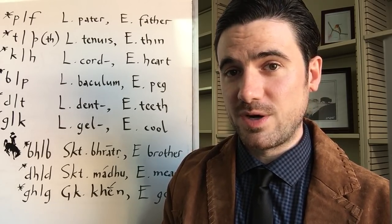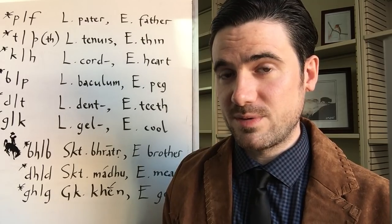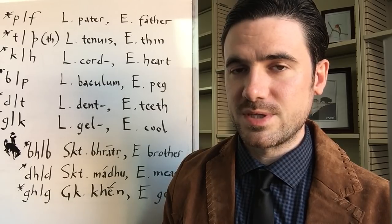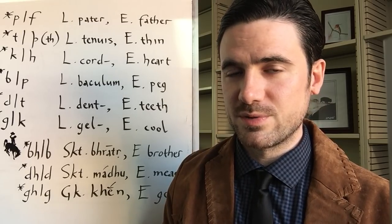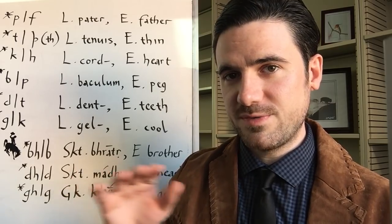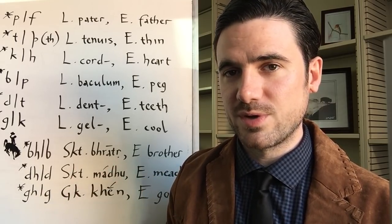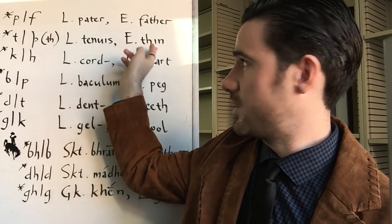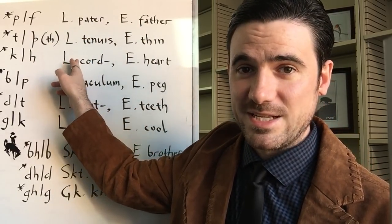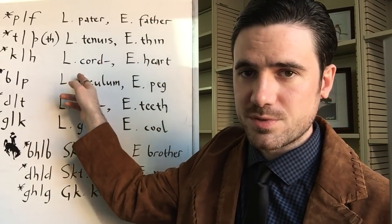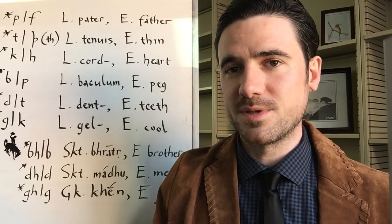One of the interesting things about English is that it's borrowed so many words from Latin and from Latin derived languages like French that you often have words that are affected by Grimm's Law, the native English vocabulary, and words that are not affected by Grimm's Law because they've been borrowed from Latin, which has no Grimm's Law because it's not Germanic. So you have to watch out in English and sort of sift through the borrowed versus the unborrowed vocabulary. For instance, we have father, but we also have paternal from Latin. We have thin, but we also have a tenuous argument from Latin. We have heart, but we also have cordial greetings. So that's something you have to watch for.